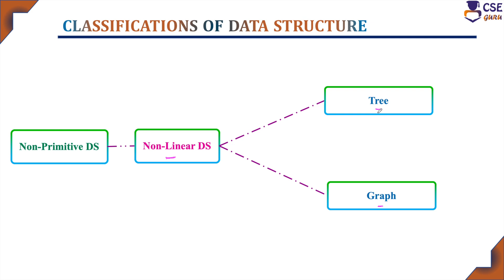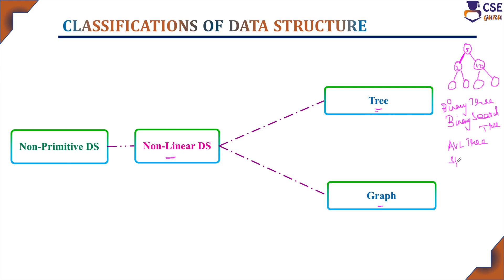Tree data structure consists of vertices and edges represented in a hierarchical manner, showing parent-child relationships. The top is the parent node, below are children nodes, and below those are grandchildren nodes. Different types of tree data structures include binary tree, binary search tree, AVL tree, splay tree, red-black tree, and B-tree. Several popular tree data structures will be studied in detail with examples.